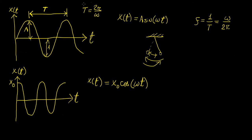Now the period is connected to something called the angular frequency of the oscillation. And essentially the relationship is T = 2π/ω.